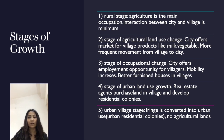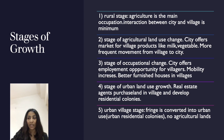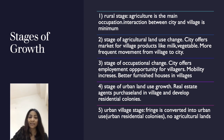Fifth is the urban village stage. Here, the fringe area is converted into urban use. Urban colonies start being built in these areas, and as a result no agricultural land remains.